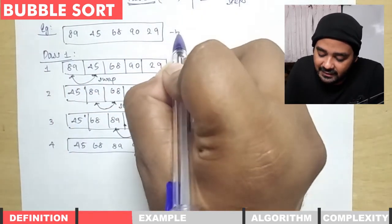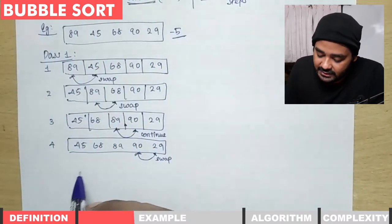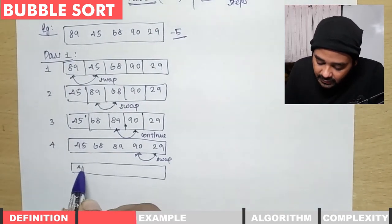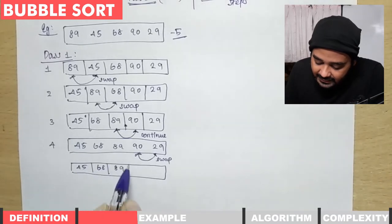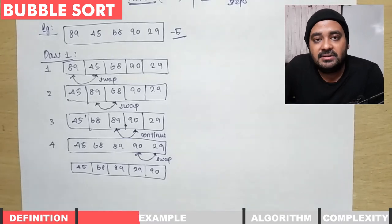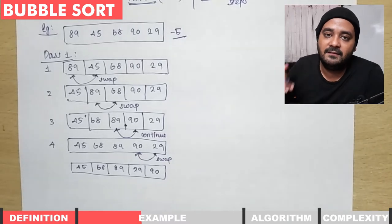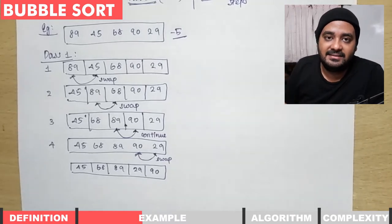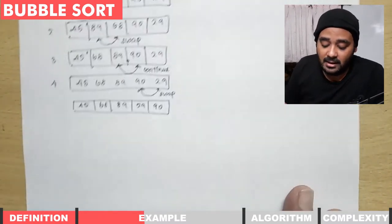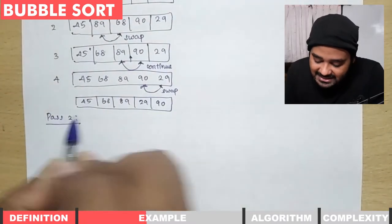For five elements we perform four steps. The final output of pass one is: 45, 68, 89, 29, and 90. This is the output of the single pass. We said that in bubble sort we need n minus 1 passes, so for five elements we need four passes. Pass one is now complete.